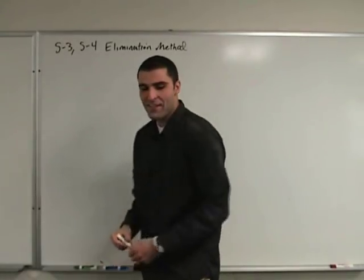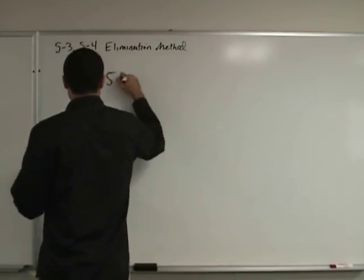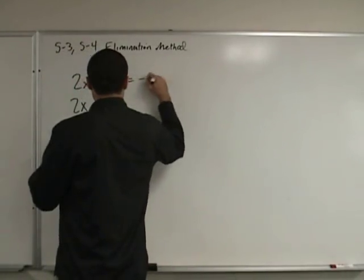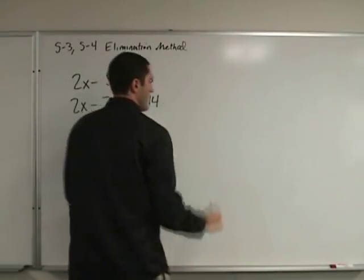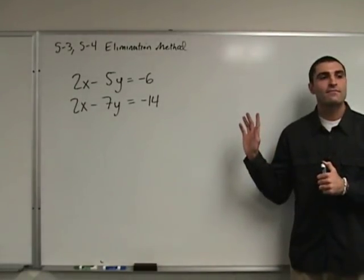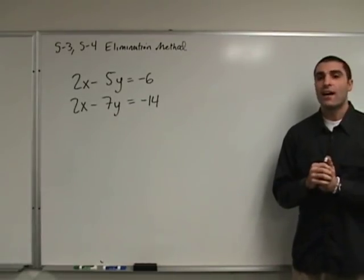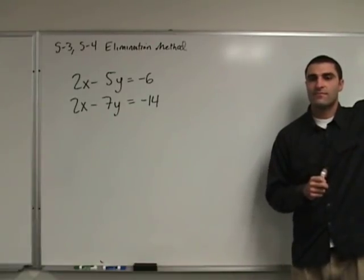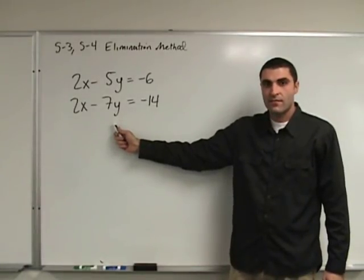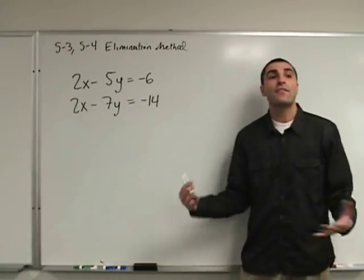Here's number three: 2x minus 5y equals something. If we were to just add these two equations directly, we'd get 4x minus 12y equals negative 20 — just another equation with two variables. Nothing was eliminated.